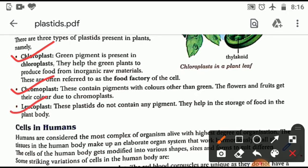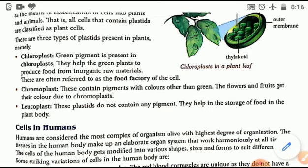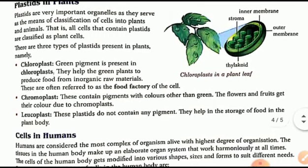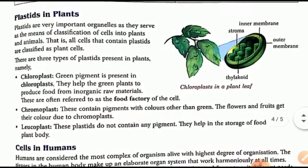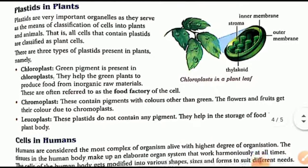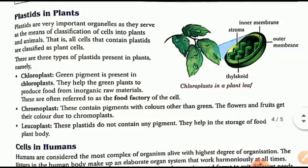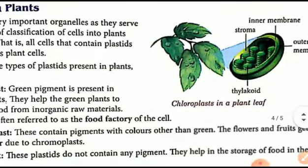Chloroplasts contain the green pigment chlorophyll and help green plants to produce food from inorganic raw materials, so they are often referred to as the food factory of the cell due to the presence of chlorophyll. Chromoplast contains pigments with colors other than green — red, orange, and yellow — so flowers and fruits get their color from chromoplast. Leucoplast does not contain any pigment and helps in the storage of food in the plant body.